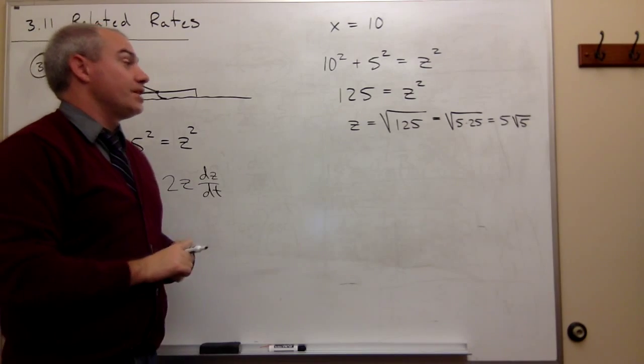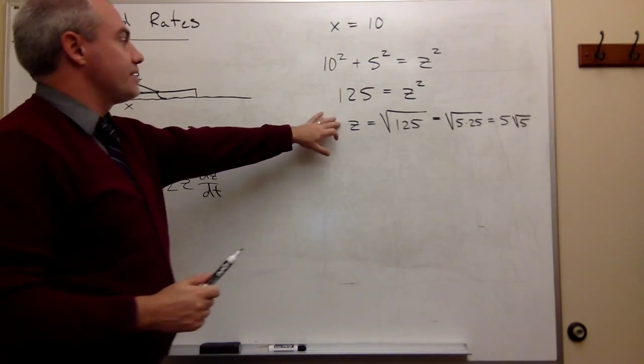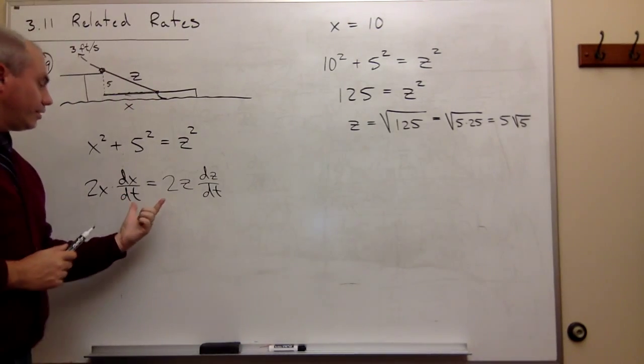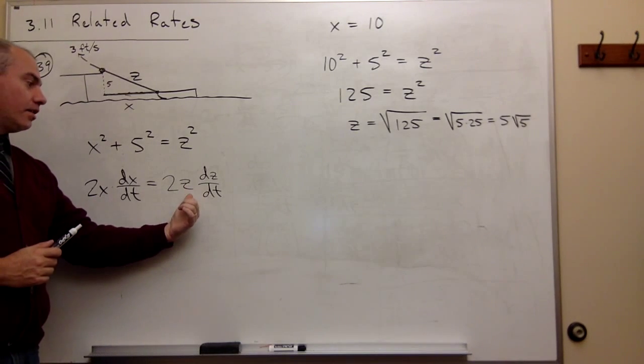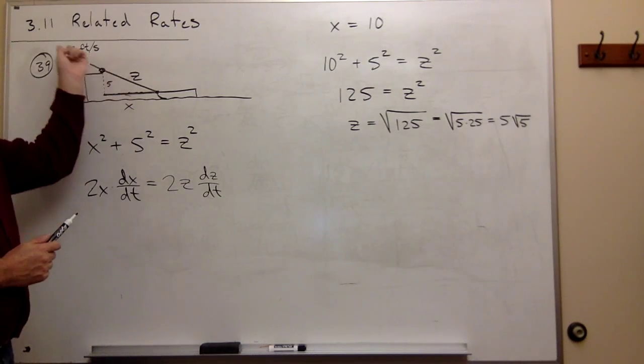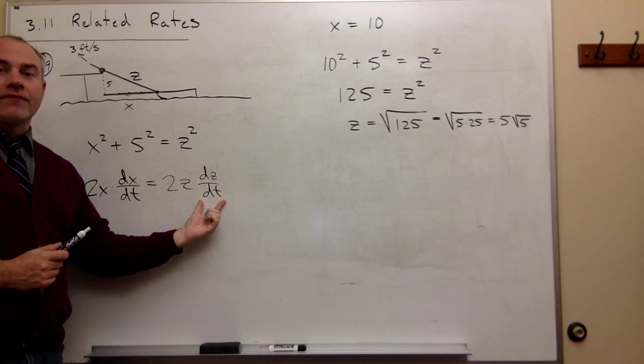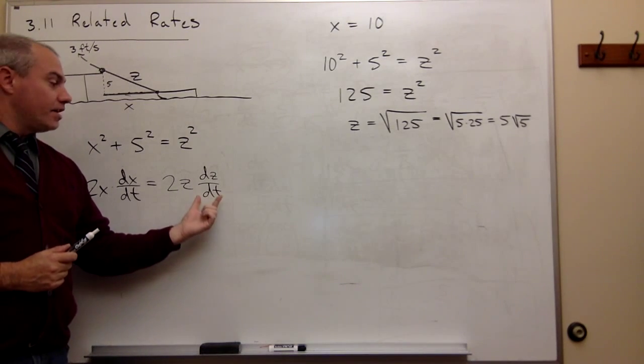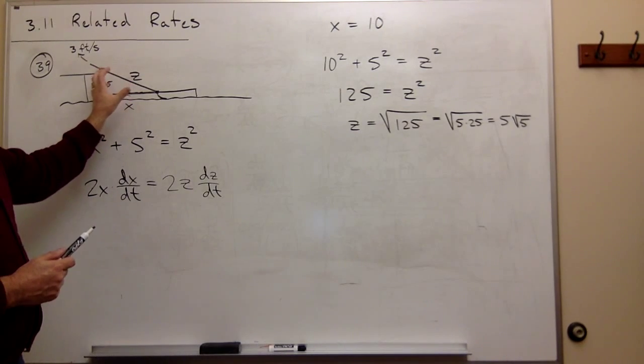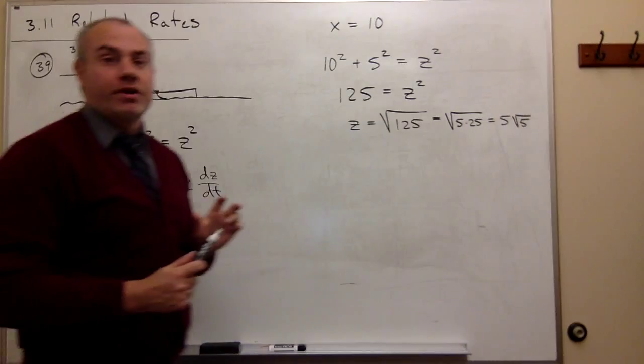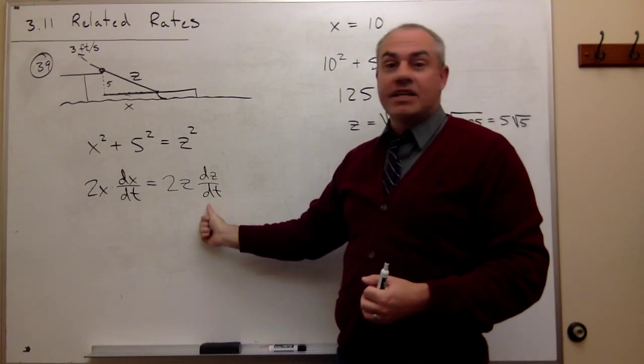So z would be 5√5. Now that we've got z, we can go back to this equation. We now know x, we now know z, we know dz/dt because we know that the rope is being pulled in at 3 feet per second. We need to be a little bit careful here though, because is z getting smaller as a quantity or is it getting bigger as we pull in the rope? It's pretty clear that as I pull in the rope, z gets smaller, so that means dz/dt needs to be a negative value.